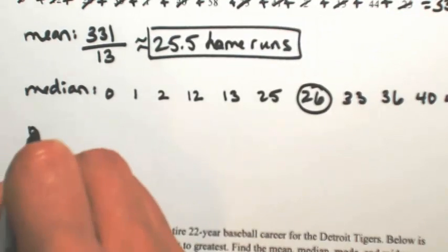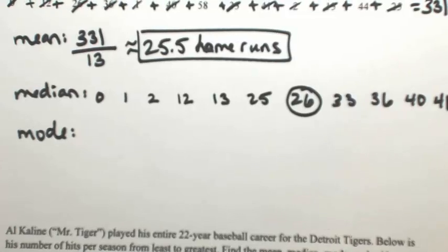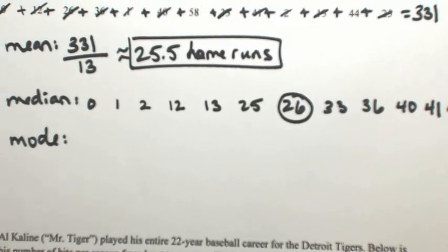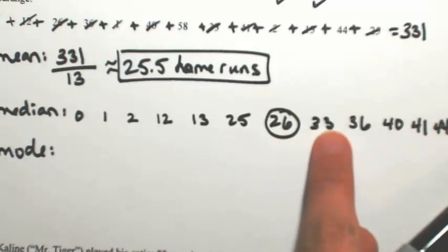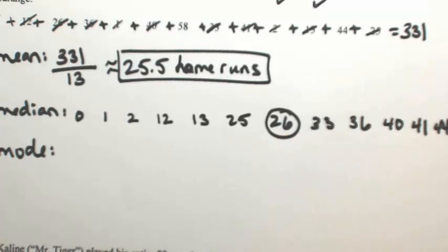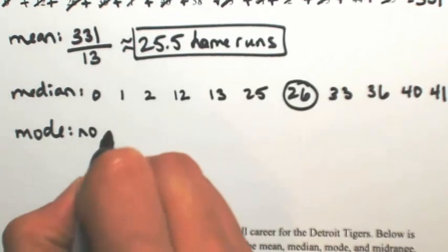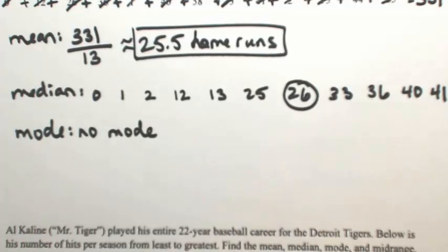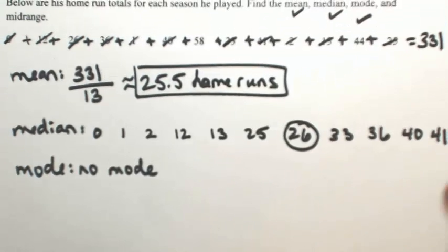The next thing we want to find is the mode. Mode is simply the most repeated number. Looking at the ordered data to see if any numbers repeated — none of them repeated. So we actually say this one has no mode. Be careful that you don't say zero; zero means that zero repeated the most, which is not the case. We just say no mode.